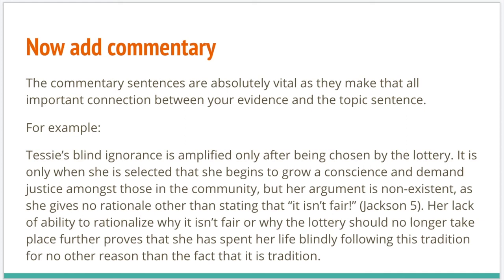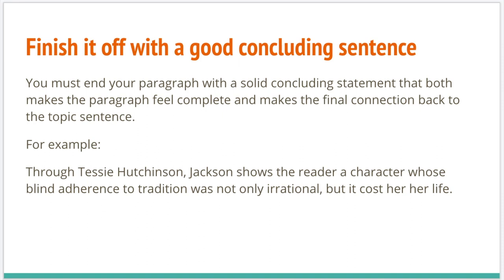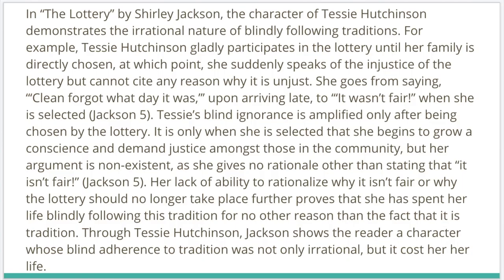Now the commentary: 'Tessie's blind ignorance is amplified only after being chosen by the lottery. It is only when she is selected that she begins to grow a conscience and demand justice, but her argument is non-existent as she gives no rationale other than stating that it isn't fair. Her lack of ability to rationalize why it isn't fair or why the lottery should no longer take place further proves that she has spent her life blindly following this tradition for no other reason than the fact that it is tradition.' We finish with the concluding sentence: 'Through Tessie Hutchinson, Jackson shows the reader a character whose blind adherence to tradition was not only irrational but it cost her her life.'